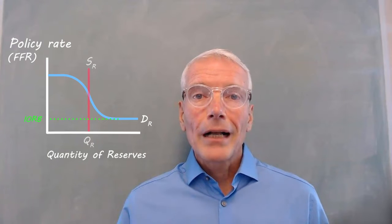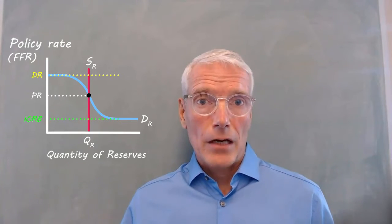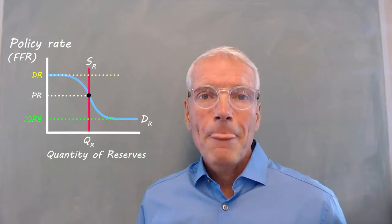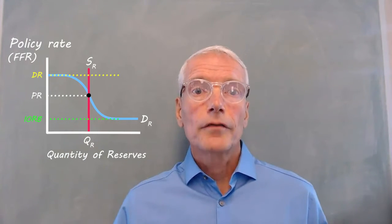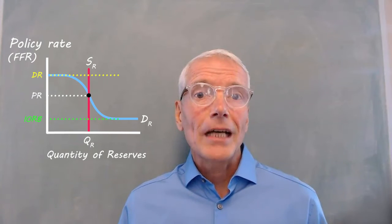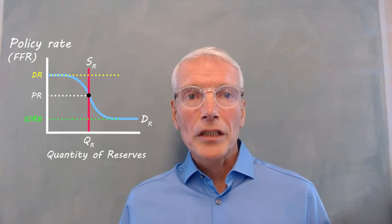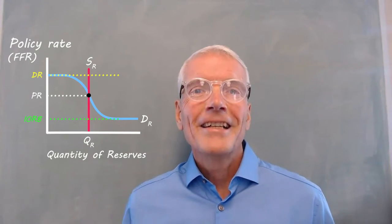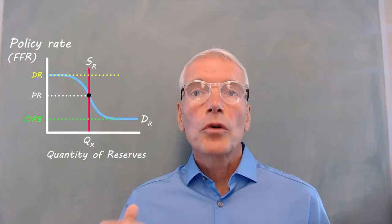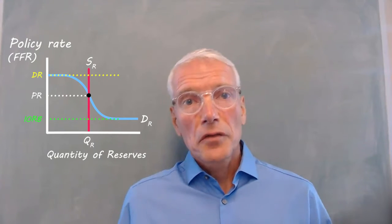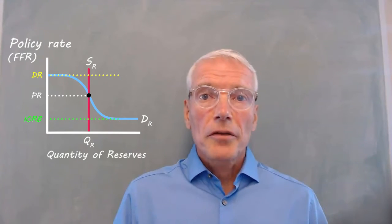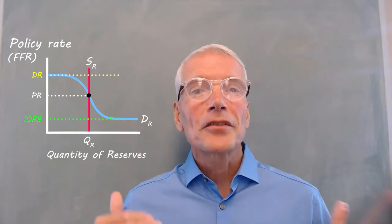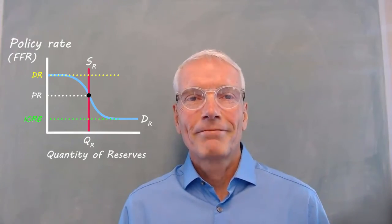If the policy rate is between the discount rate and the interest on reserve balances rate, the demand curve for reserves is downward sloping, because a lower price for borrowing money — a lower policy rate — makes holding more reserves justifiable, so that banks can respond quickly to unexpected opportunities to make new loans or investments.